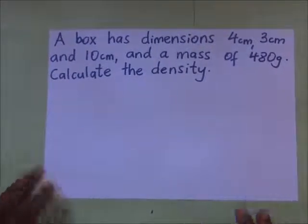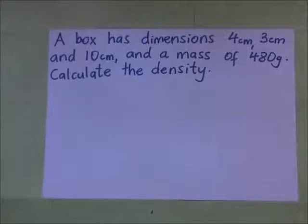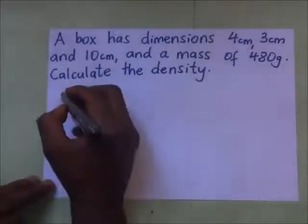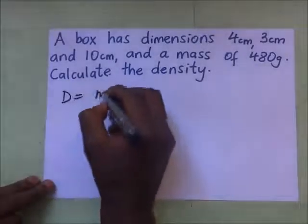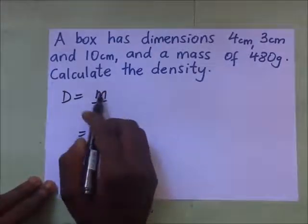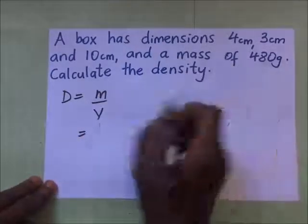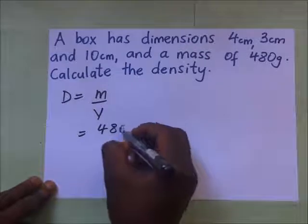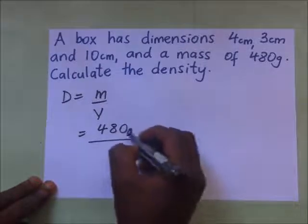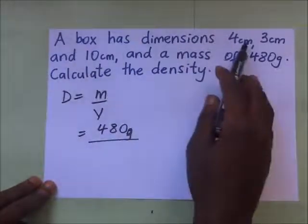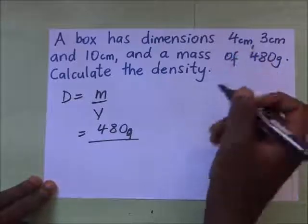A box has dimensions of 4 centimeters, 3 centimeters, and 10 centimeters, and a mass of 480 grams. Calculate the density. We know that density equals mass over volume. Our mass is 480 grams, divided by our volume.